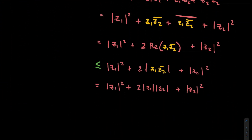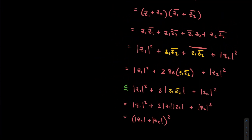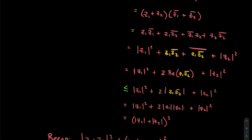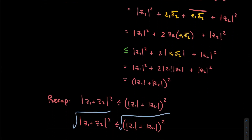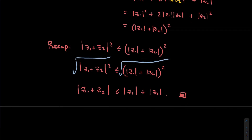Putting it all together: |z₁ + z₂|² ≤ |z₁|² + 2|z₁||z₂| + |z₂|² = (|z₁| + |z₂|)². Taking square roots of both sides gives us the triangle inequality: |z₁ + z₂| ≤ |z₁| + |z₂|. That wasn't too hard.